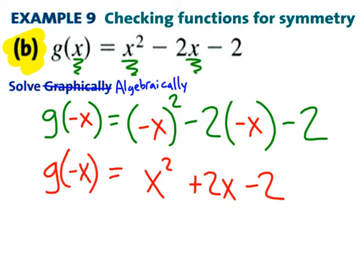So, compare G of negative X with G of X. Are they the same thing? No, they're not. Therefore, this graph is not even. Now, remember the definition for odd functions? That's where G of negative X is the opposite of G of X. Let's now check to see if this is odd.